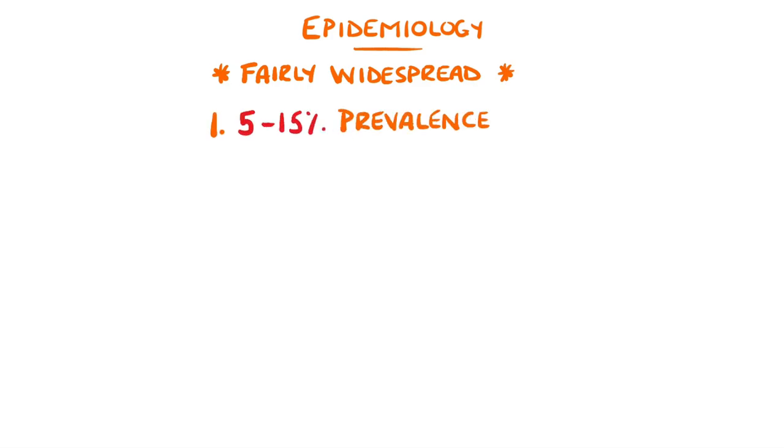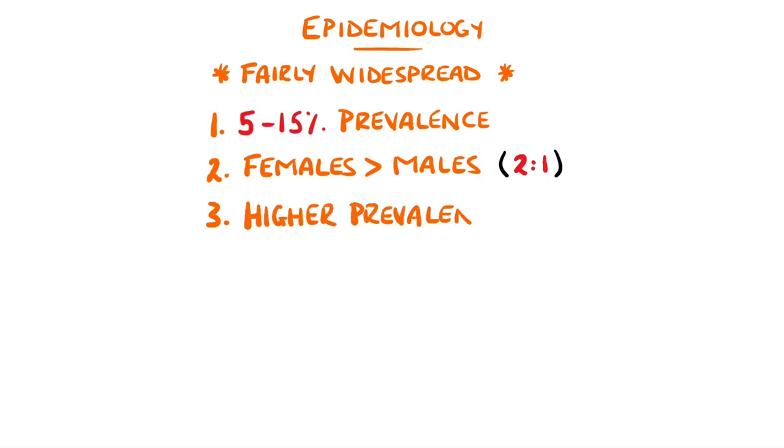Overall, it's actually a fairly common condition, with between 5 and 15% of the general population being affected. It is more common in females than in males by around 2 to 1, and is even more common in pregnancy. Although the prevalence is higher as people get older, the mean onset is typically around 30, but any age can be affected.